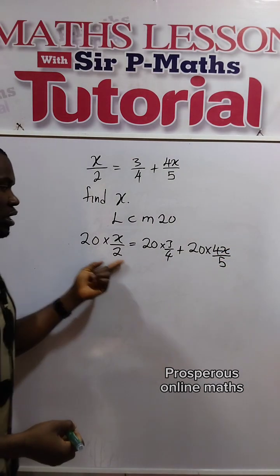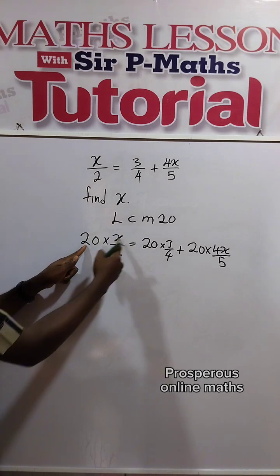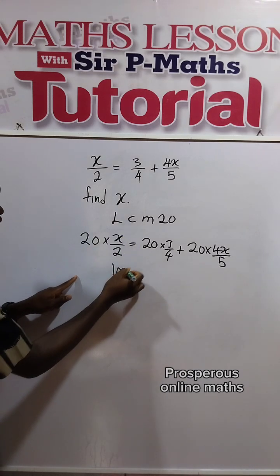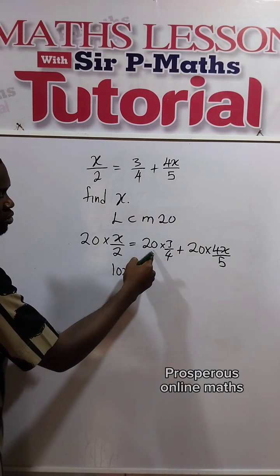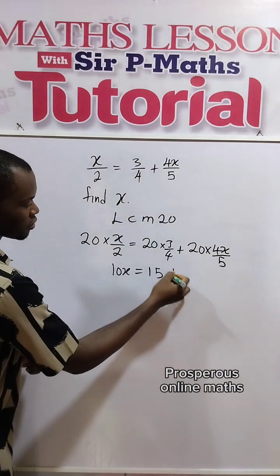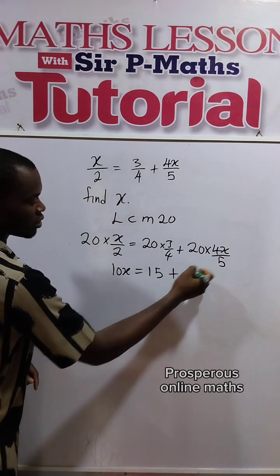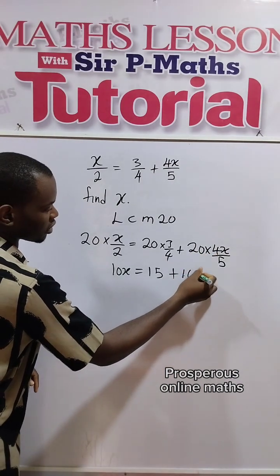Now use your denominators and divide the 20. 2 divided 20 is 10. 10 times x, we have 10x. 4 divided 20 is 5. 5 times 3, that gives us 15. 5 divided 20 is 4. 4 times 4x will have 16x.